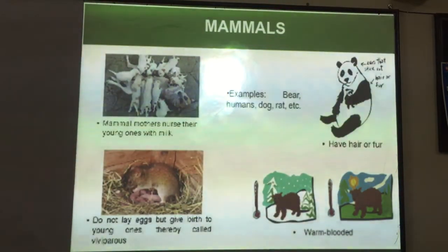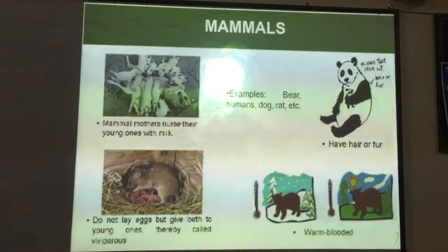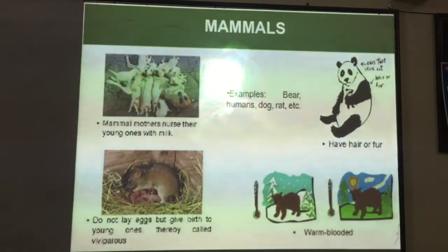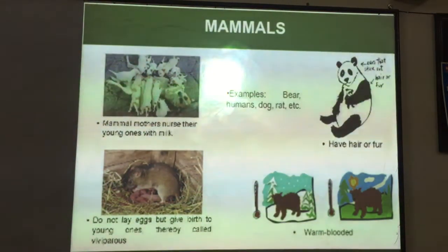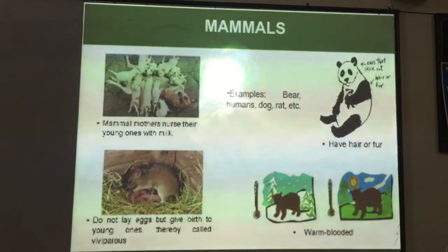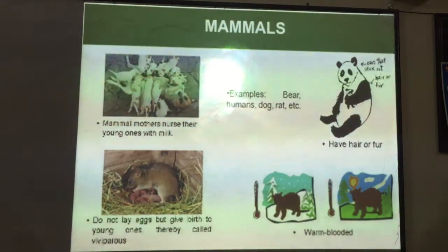Then we have mammals. Even human beings are included in mammals. Mammals have mammary glands for milk, and they usually nurse their young ones with milk — that is one of the main qualities of mammals. They have hair on their body and usually do not lay eggs; they give birth to young ones. These are warm-blooded animals, meaning they have a constant body temperature, and that is why they are capable of surviving in extreme temperatures. Even human beings are an example of mammals.